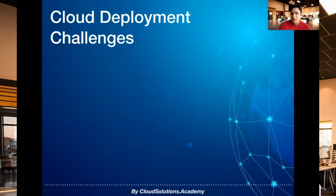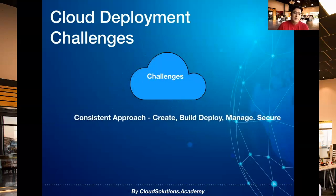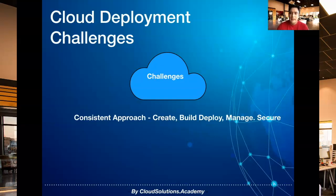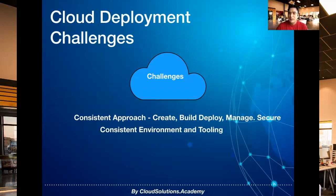As organizations start to transition towards each of these cloud deployment models, there arise many challenges. The fundamental question is: how can you create, build, deploy, manage, and secure cloud applications in a consistent way across all of these environments? For instance, if you're an on-prem customer, how can you create applications deployable on a multi-cloud or edge environment? And how can you have consistent tooling so that your continuous integration and continuous deployment processes work seamlessly across all these environments?